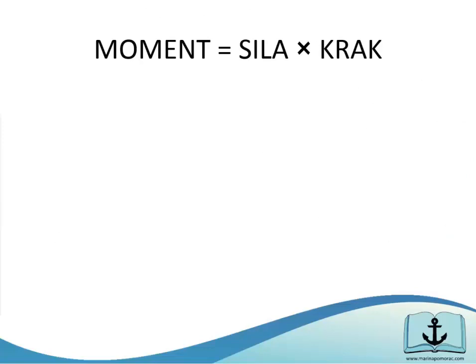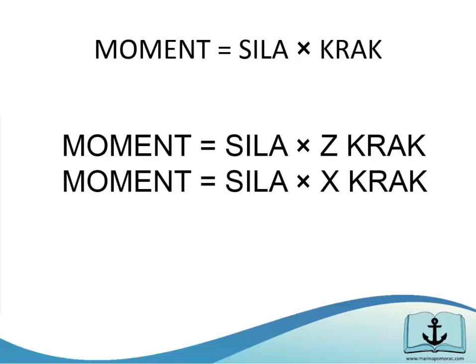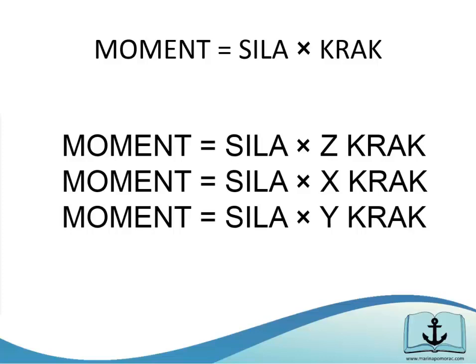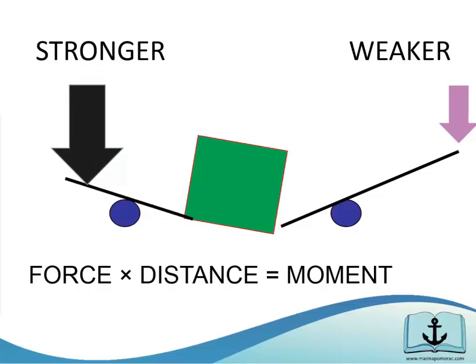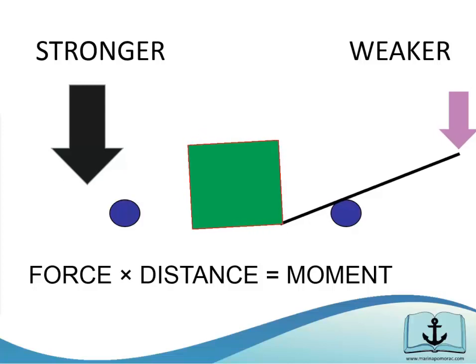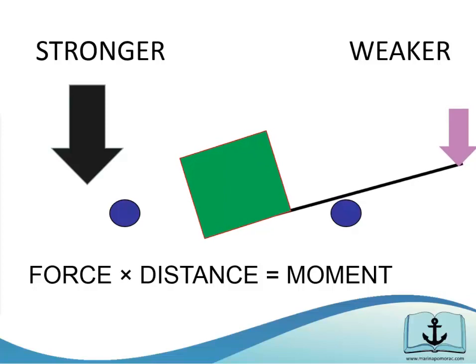Jer sjetimo se formule - moment je sila puta krak. Ista sila, ali tri puta ponavljamo drugi krak: vertikalni, horizontalni i uzdužni. Ako je profesor bio kvalitetan iz fizike, zapamtili smo tu najvažniju formulu koju koristimo na bezbroj načina u stabilnosti broda - da je moment sila puta krak, što znači da jači čovjek može podići nešto ako ima kraći štap, a slabiji čovjek može to isto učiniti sa dužim štapom. I jedan i drugi stvaraju isti rezultat. Jača sila manji krak i manja sila duži krak stvaraju jednaki moment.